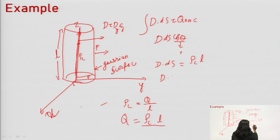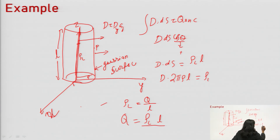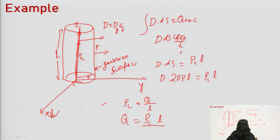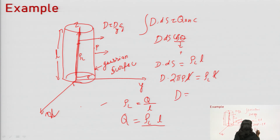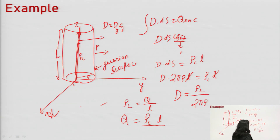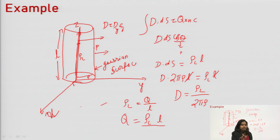The final equation is D dot ds equals Q enclosed, which equals rho_l times L. The total surface area of the cylinder is 2π rho times L. So we can write D times 2π rho times L equals rho_l times L. This L and that L will cancel out and we can get the value of D as rho_l divided by 2π rho, which is the same as we have found using Coulomb's law in previous classes for an infinite line conductor.